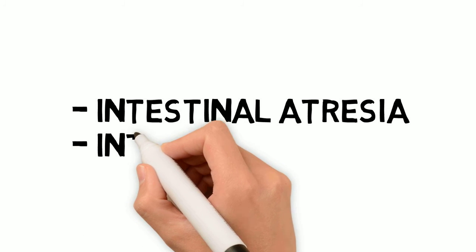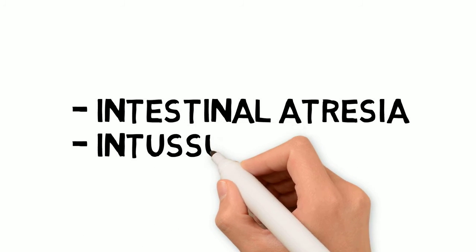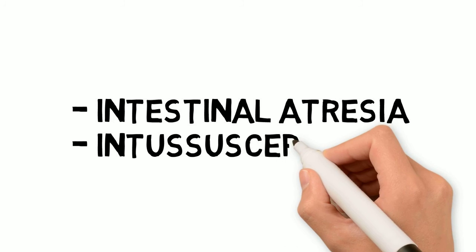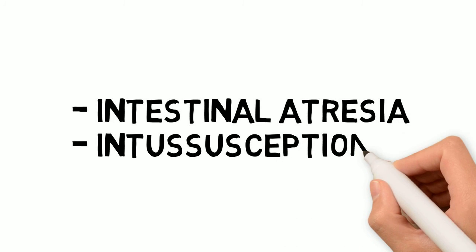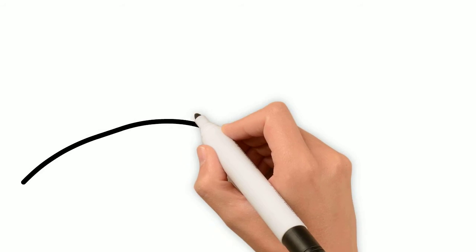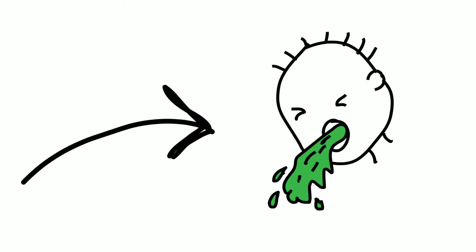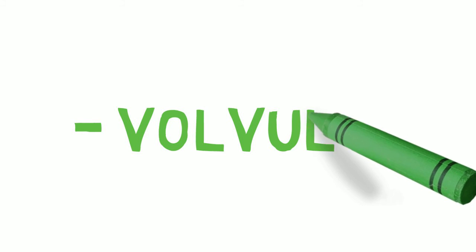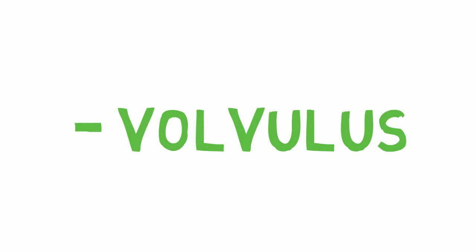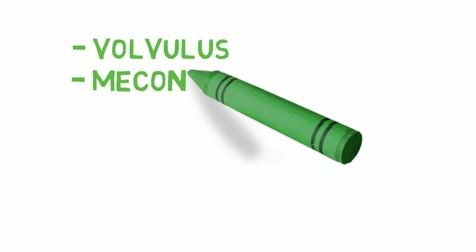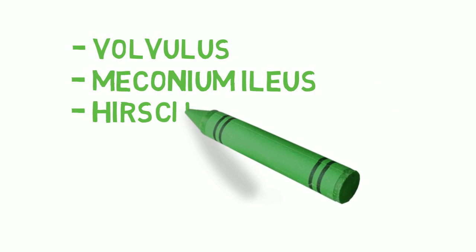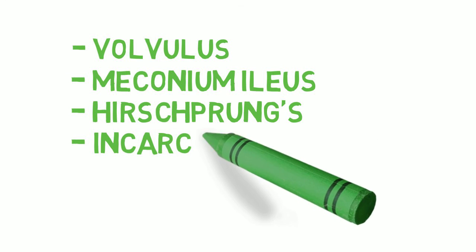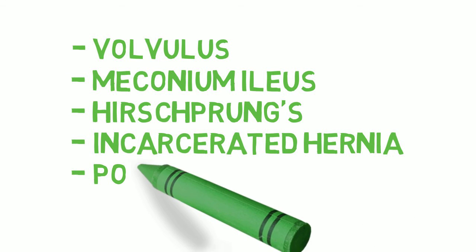Intussusception can also present with bilious or non-bilious vomiting depending on where the area of intussusception is along the bowel. The remainder of the causes of bowel obstruction that we talked about typically present with bilious vomiting. This includes a volvulus, which should be top on your list of concerns for an infant presenting with bilious vomiting. Other typically bilious causes of obstruction include meconium ileus, Hirschsprung's disease, an incarcerated hernia, and post-operative obstruction.